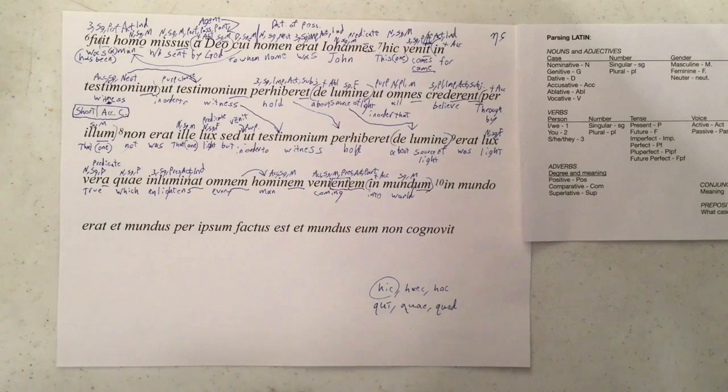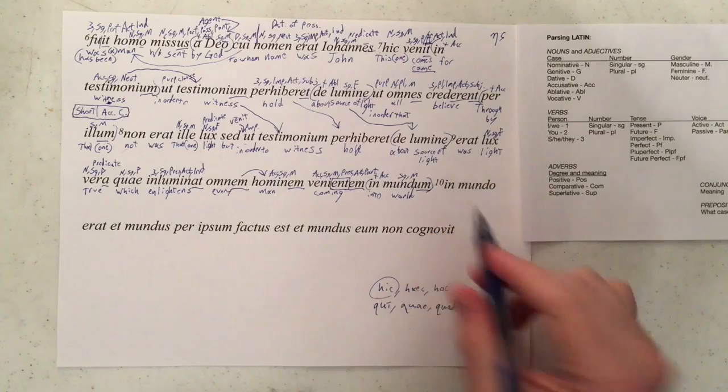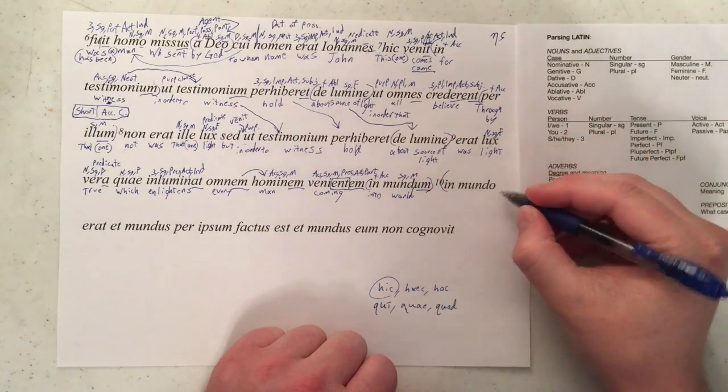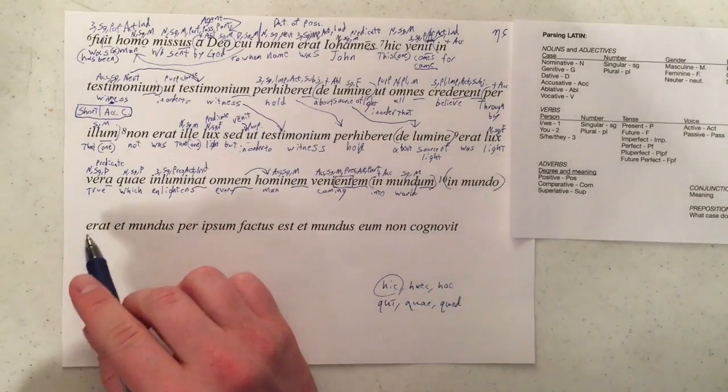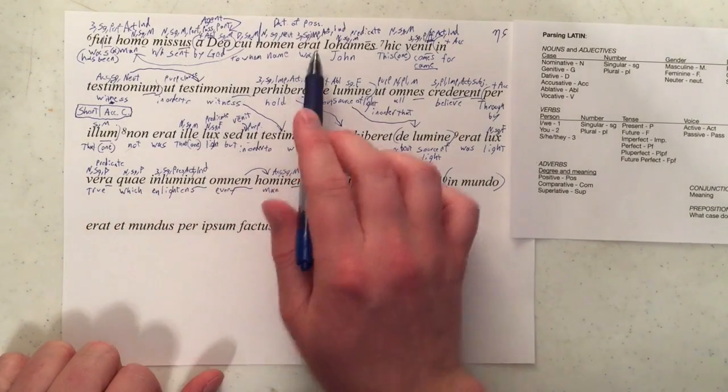Okay, now we want to find our verb first so that it can tell us if we're looking for a singular or plural subject. You've got in mundo here, which is a prepositional phrase. We're going to go ahead and block that off so we could do it later. And then we come across erat, the one I brought up earlier. We've already parsed that.